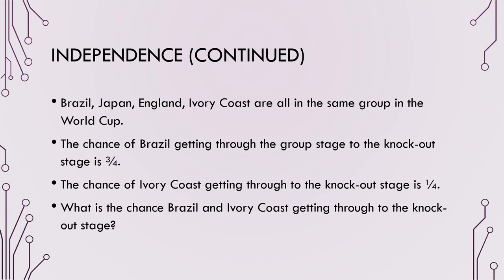In the World Cup, a team's chance of getting through the first round is not solely dependent on how that team performs — it also depends on the other teams within the group. This means we can't be confident that the probability of one team getting through is set based solely on what they do; other probabilities must be taken into account.